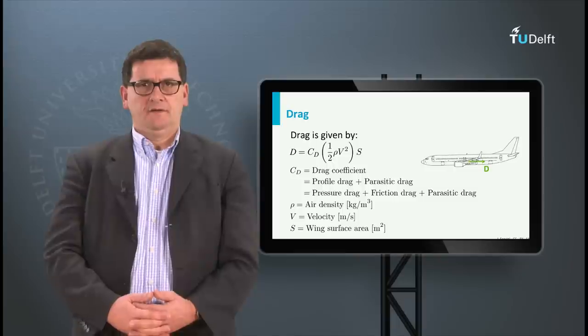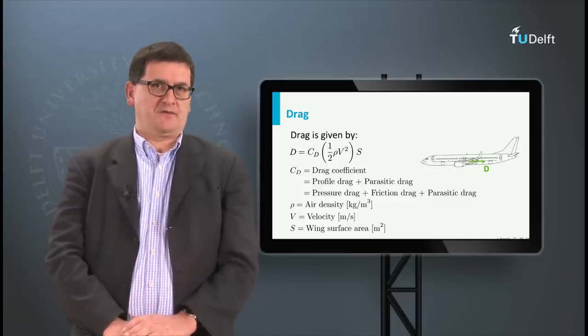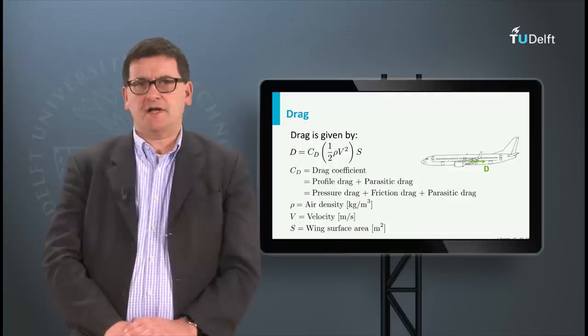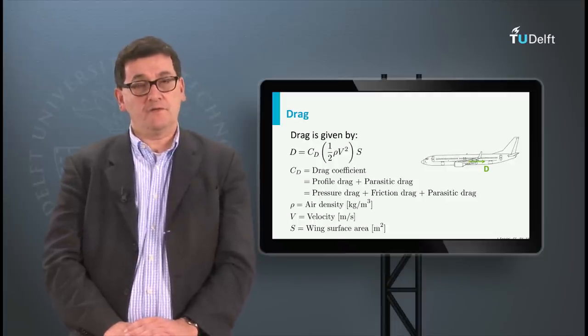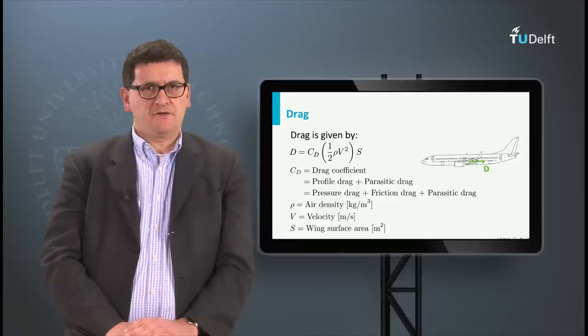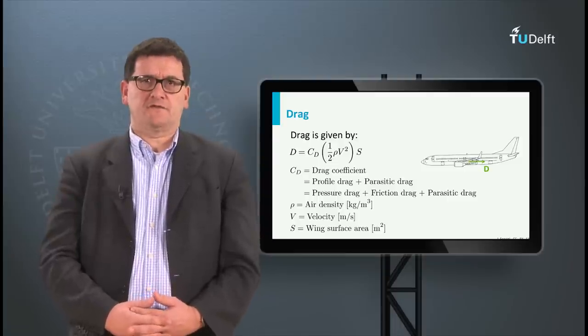In the second way the profile drag can be further split into pressure drag and friction drag. The pressure drag is the resultant force when we take the integral of the pressure over the wing profile. The friction drag arises when the air has contact with the skin surface of the wing.